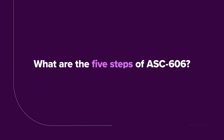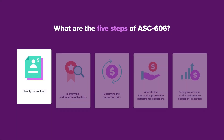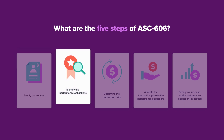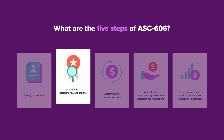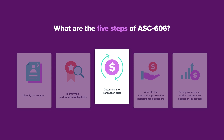ASC-606 defines a five-step process for recognizing revenue. Number one: identify enforceable contracts for products or services to customers. Number two: identify the performance obligations in the contract — basically what must be delivered in exchange for payment. Number three: determine the transaction price. This can get complex fast when variable amounts come into play, like discounts or return policies.